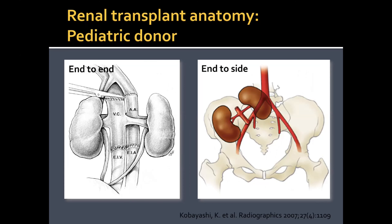Vascular connections can be done as an end-to-side anastomosis or end-to-end anastomosis; end-to-side is more common. In cadaveric donors, a portion of the aorta is taken along with the renal artery — called a Carrel patch — giving a larger area for anastomosis and fewer complications. For pediatric en-bloc donors, the donor aorta and IVC can be interposed into the recipient's external iliac vessels, or one end can be sutured closed with an end-to-side anastomosis performed.